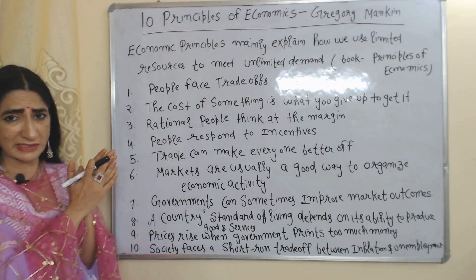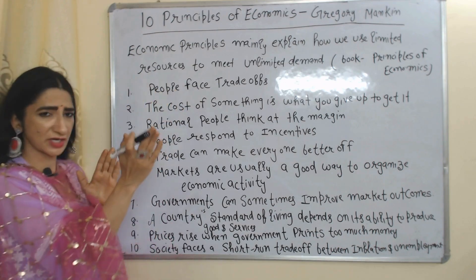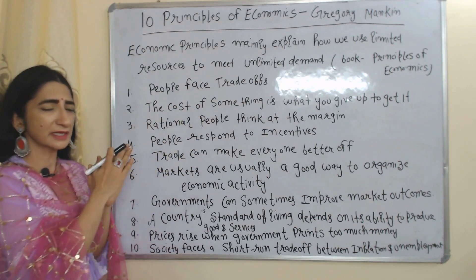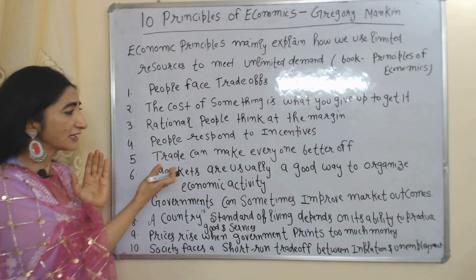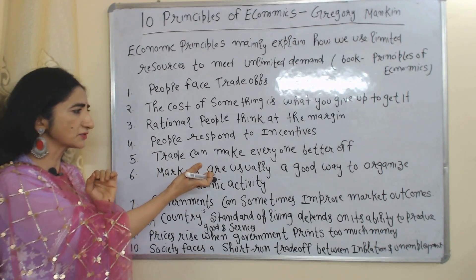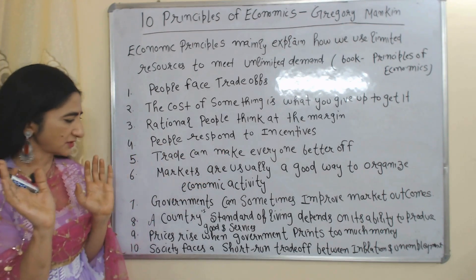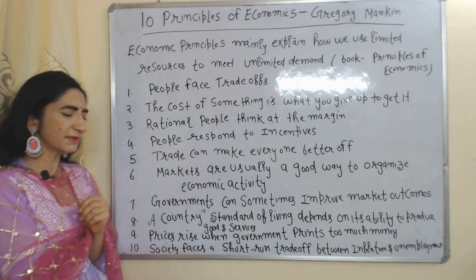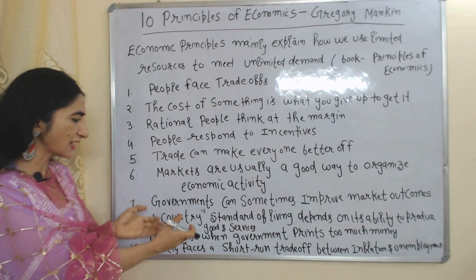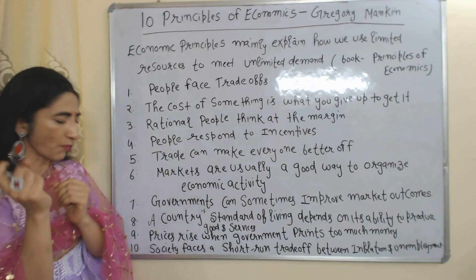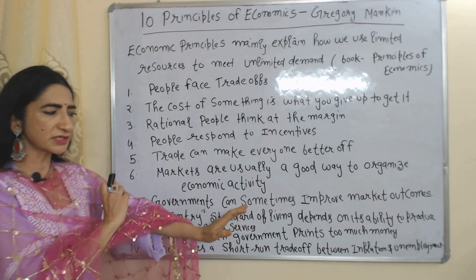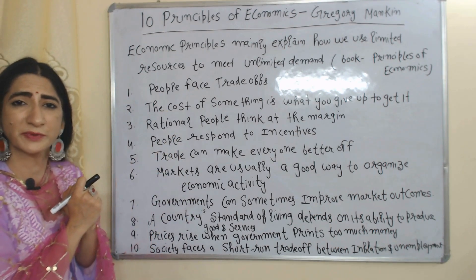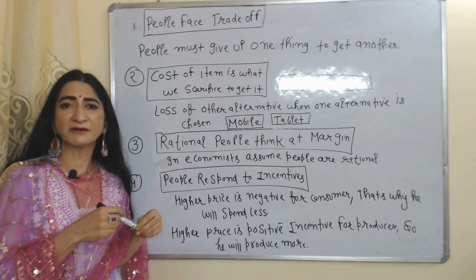These 10 principles are: people face trade-off; the cost of something is what you give up to get it; rational people think at the margin; people respond to incentives; trade can make everyone better off; markets are usually a good way to organize economic activities; government can sometimes improve market outcomes; a country's standard of living depends on its ability to produce goods and services; prices rise when government prints too much money; and society faces a short-run trade-off between inflation and unemployment.